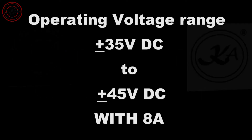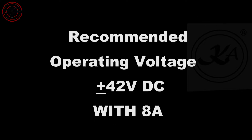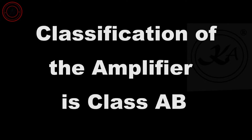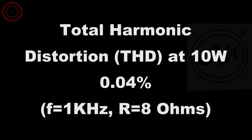Here are the specifications of the module KA2421. Operating voltage range is from DC plus minus 35 voltage to plus minus 45 voltage DC dual supply, with minimum 8 ampere. Recommended operating voltage is DC plus minus 42 volt with minimum 8 ampere. Input impedance of this amplifier module is 56 kilo ohms. Classification of this amplifier module is Class AB. Total harmonic distortion, THD, at 10 watts is 0.04%, at the frequency of 1 kilohertz and load impedance of 8 ohms.